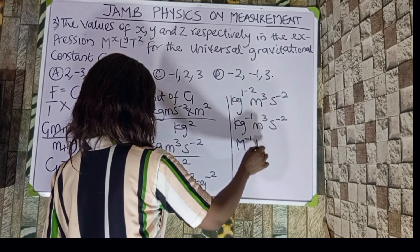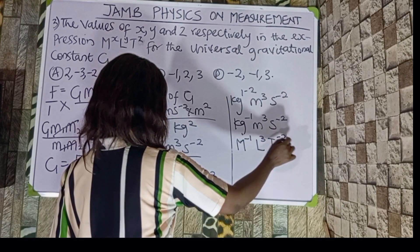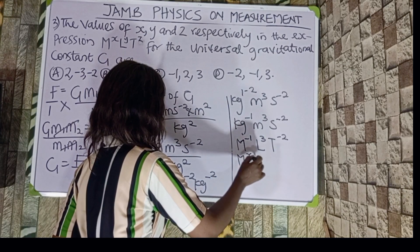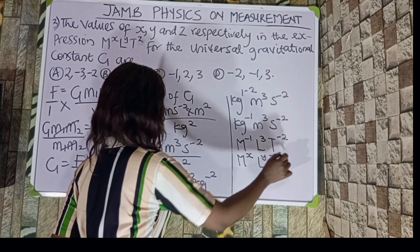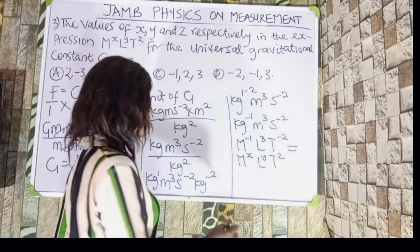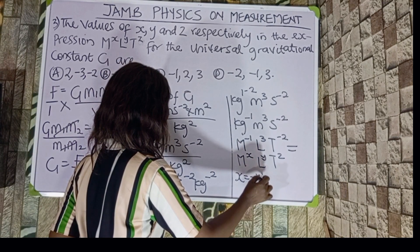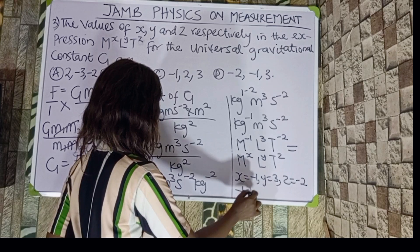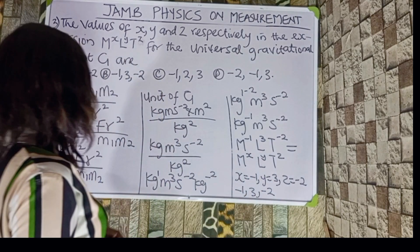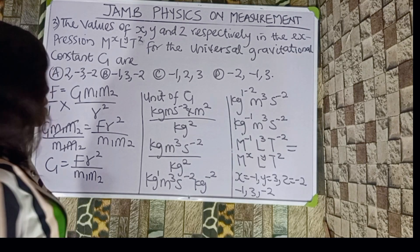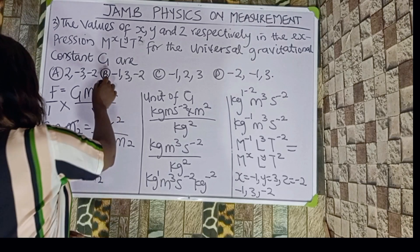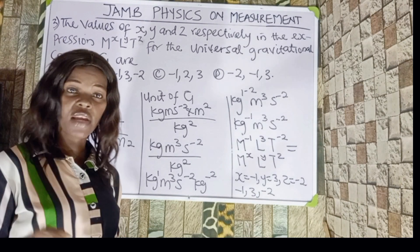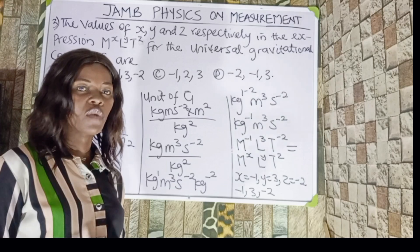Getting the dimension of G: kilogram⁻¹ → M⁻¹, meter³ → L³, second⁻² → T⁻². So the dimension is M⁻¹L³T⁻². Relating this to MˣLʸTᶻ, we get x = -1, y = 3, and z = -2. The answer is (-1, 3, -2), which is option B.